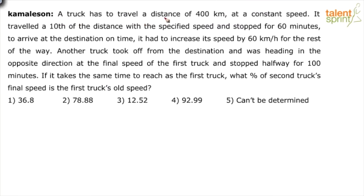A truck has to travel a distance of 400 kilometers at a constant speed. It traveled a tenth of the distance with the specified speed and stopped for 60 minutes. To arrive at the destination on time, it had to increase its speed by 60 kilometers per hour for the rest of the way. Another truck took off from the destination and was heading in the opposite direction at the final speed of the first truck.